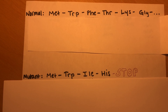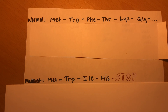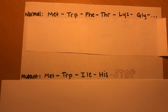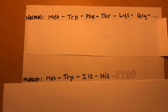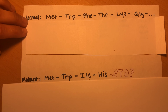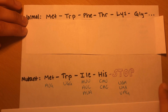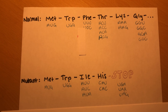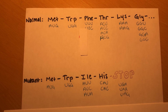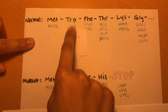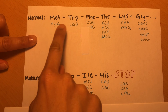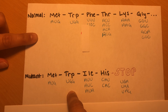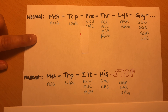Therefore, my first step is to determine the codon sequence of each amino acid in both the normal and the mutant protein sequence by using the coding dictionary. Each designated codon was determined. As you can see, methionine and tryptophan both have the same codons, AUG and UGG. Therefore, the change must have occurred following these two amino acids.